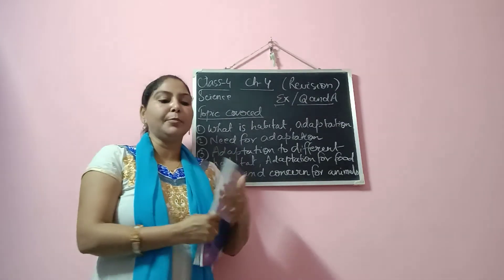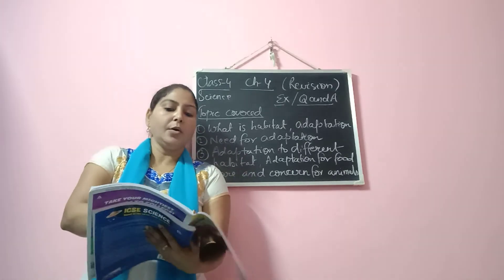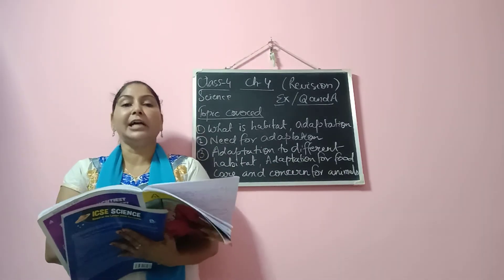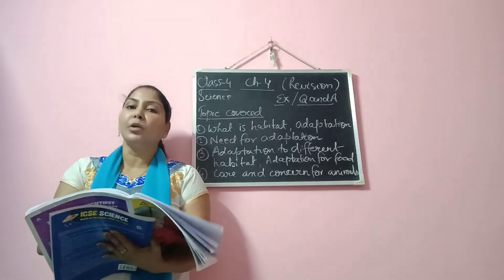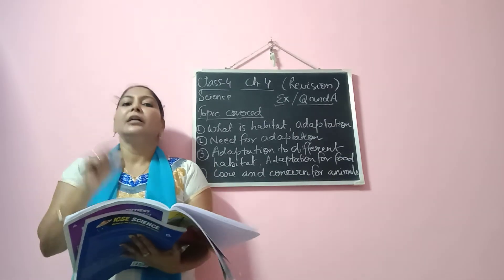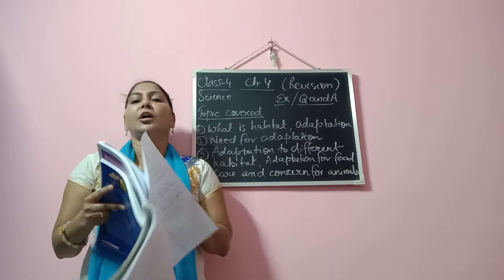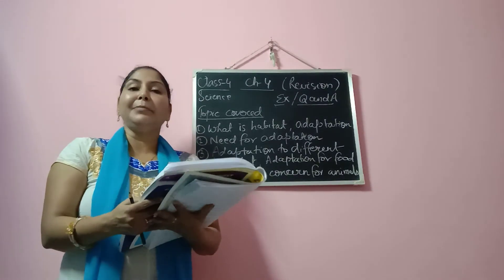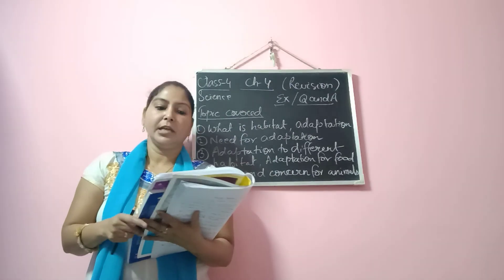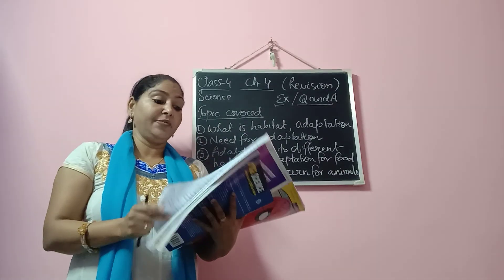Here we complete the exercise of the book. I have prepared some additional questions for you and you will write these answers in your copy — there are about 11 questions. Certain question answers I have not written because the answers are given in the book itself, so you will write the answer from the book as given. Try to frame it short, make the sentences short, and try to write in your own words. Take help of your parents as well as your book. I will be sending you these question answers — in the description box you will get a link, please see from there and copy down the answers.